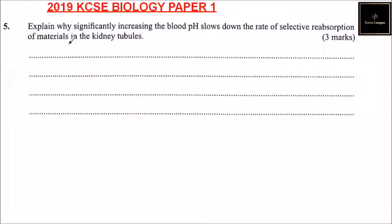Question number five: we are told to explain why significantly increasing the blood pH slows down the rate of selective reabsorption of materials in the kidney tube.